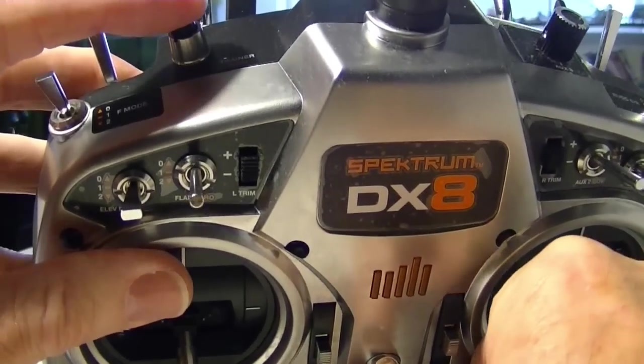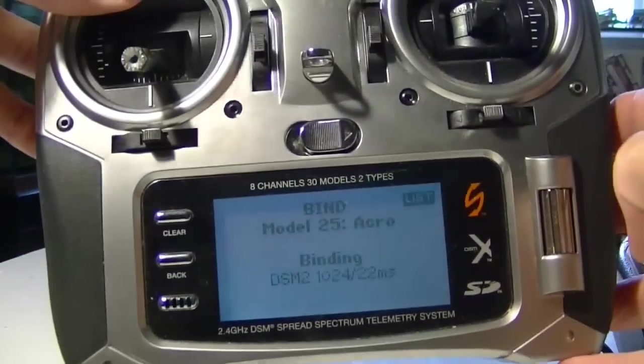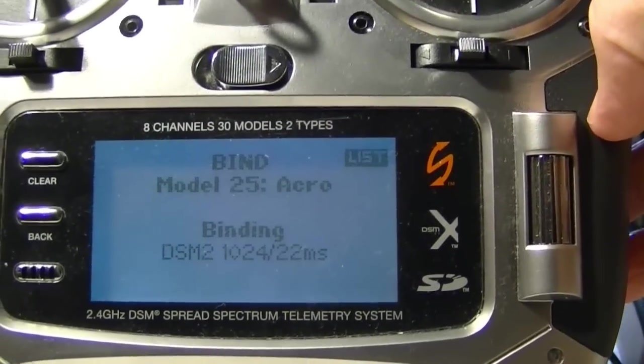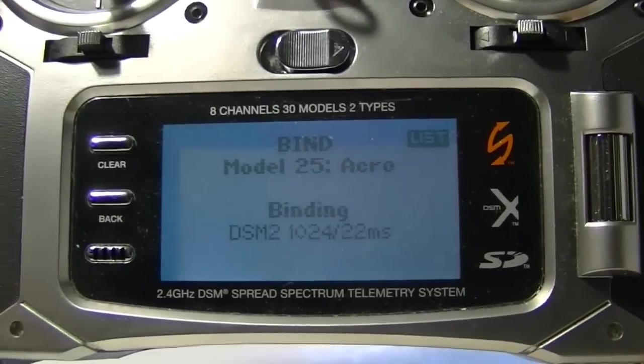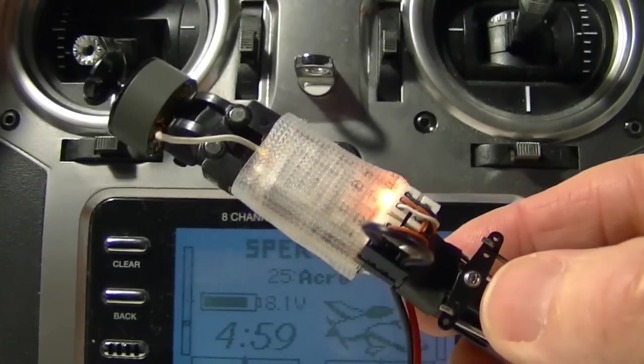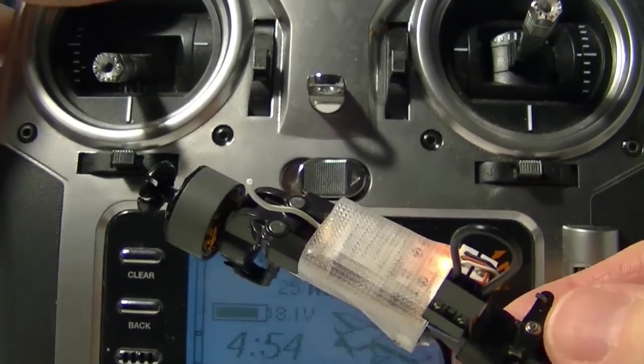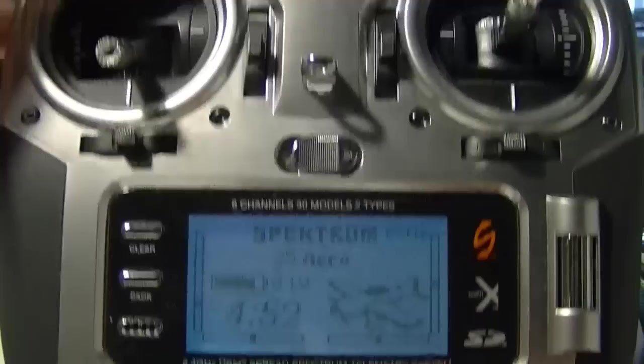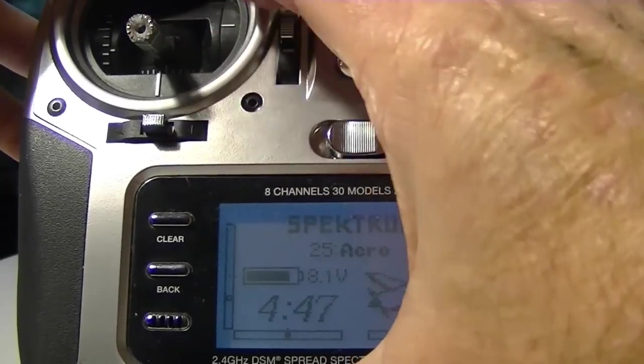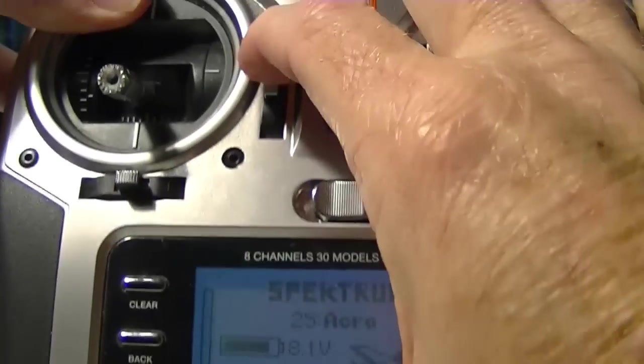Next thing we do is hold down the button on the radio here and turn on the radio. Now the radio is coming on and it says binding. Now the light just went solid on the receiver right there. But you can hear those rapid beeps again because of the throttle. We just move this down until the beeps stop - see how I trimmed that down.